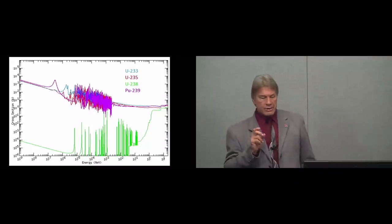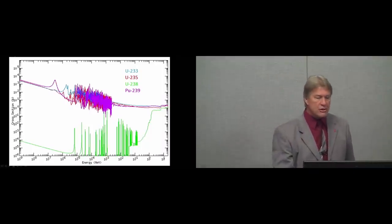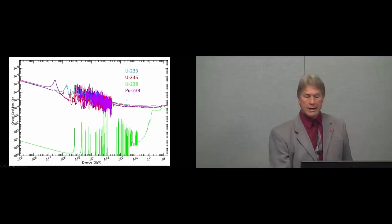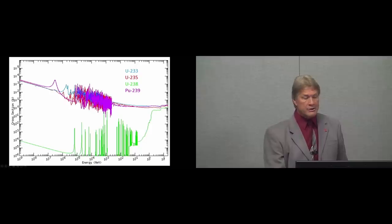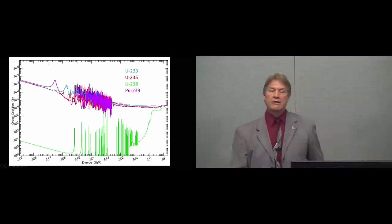It works because if I look at the fission cross-section, the chance of making a fission - it's a log scale here, and this is a log scale on the energy of the neutron. Whether I have U-233, U-235, plutonium-239, and plutonium-240, they all have a very similar cross-section in terms of the ability to make fissions.